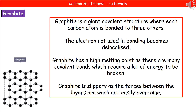In terms of the properties of graphite, it still has a high melting point because we've still got a large number of covalent bonds which require a lot of energy in order to be broken. But there are some differences between diamond and graphite. Graphite has a slippery texture because even though the covalent bonds holding those carbon atoms together are very strong, the forces between the layers are actually very weak and therefore are easily overcome, so those sheets of graphite can slide over the surface of each other.